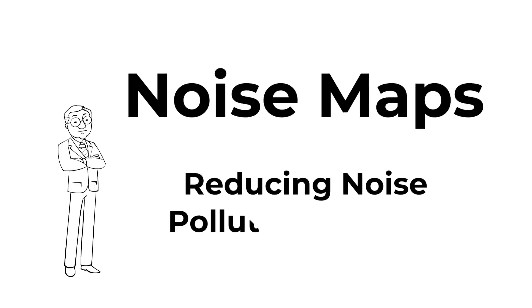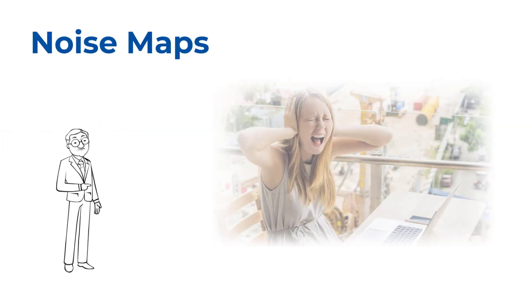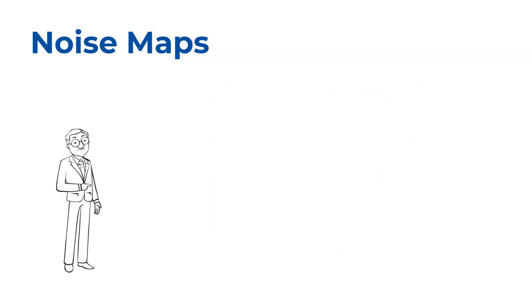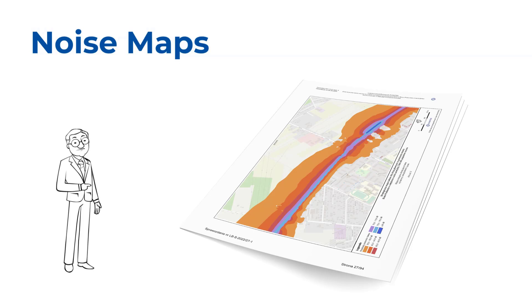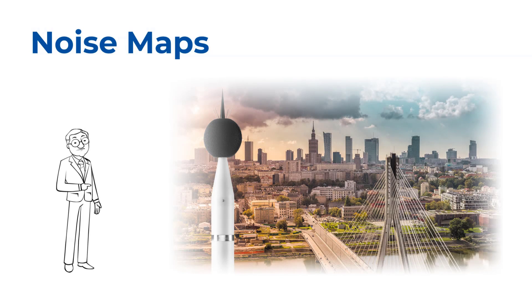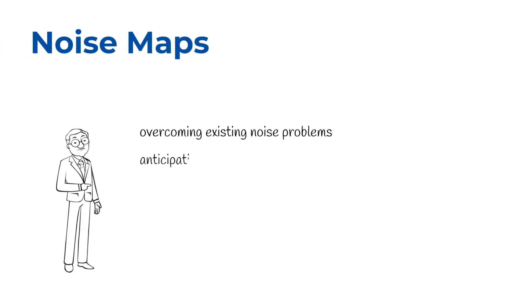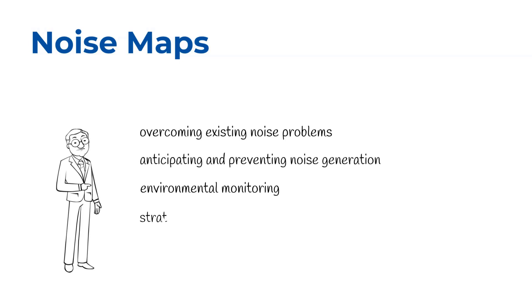Noise maps in reducing noise pollution in cities. The use of noise maps has revolutionized the way cities approach noise pollution by providing detailed, data-driven insights into the distribution and intensity of noise across different areas. Acoustic maps have made it possible for cities to proactively monitor and address nuisance noise. These maps not only help cities combat existing noise problems, but also allow them to anticipate and prevent noise generation as well as track changes over time.